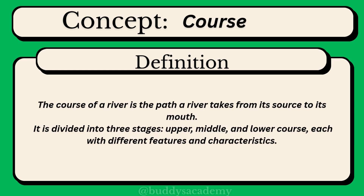Course: The course of a river is the path a river takes from its source to its mouth. It is divided into three stages: upper, middle and lower course, each with different features and characteristics.